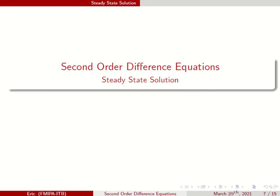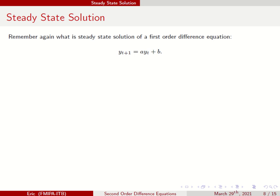Welcome back to Business Mathematics 2, MA1203. We are continuing our discussion of second order difference equations, focusing now on the steady state solution. Remember, for a first order difference equation, Y_SS equals B divided by 1 minus A, if A is not equal to 1.